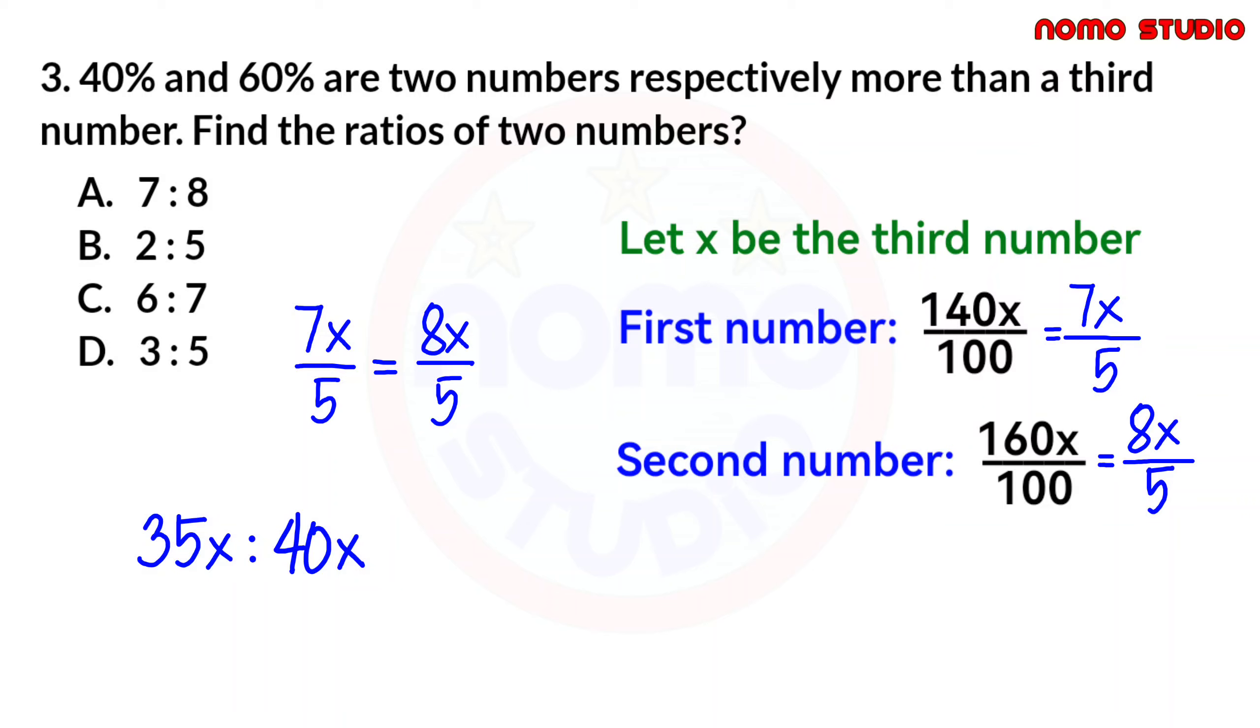What we will do now is to simplify 35x and 40x. As we all know, 35 and 40 can both be divided by 5. 35 divided by 5 equals 7. 40 divided by 5 equals 8. Therefore, 7 is to 8. The simplified form, we place on the other side.